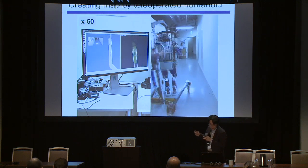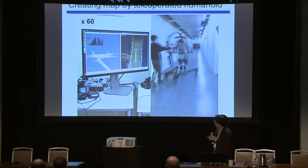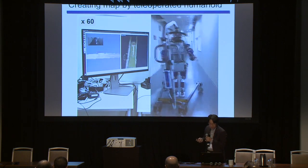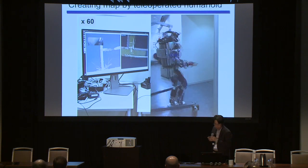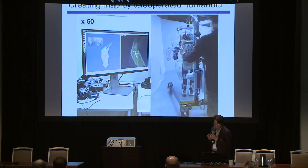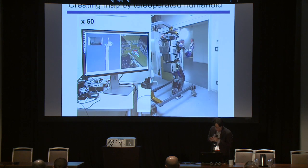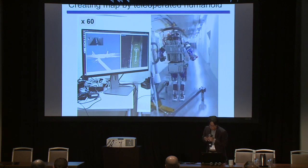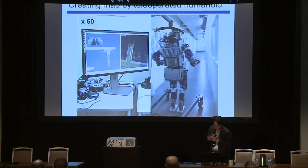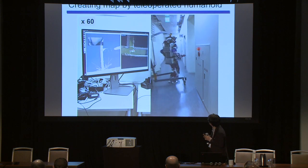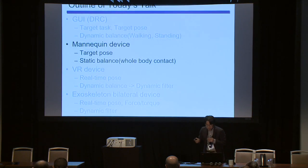This demonstrates creating a map inside a building. The humanoid robot is commanded using a footstep planner from a remote location, with the operator creating commands only from sensor images. The robot walked around the corridor and navigated to a study location while generating a map of the building.